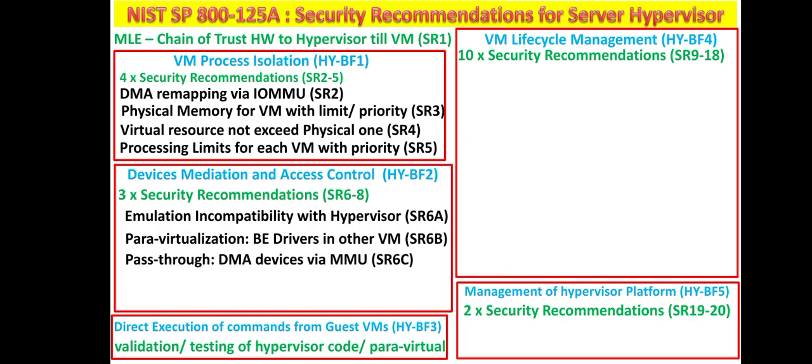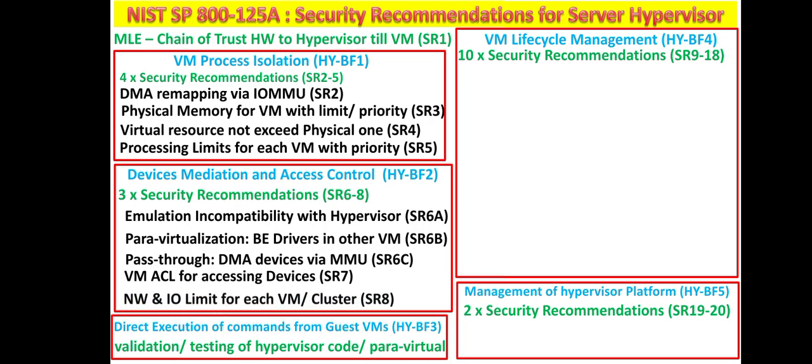For pass-through, also known as self-virtualization, VMs should not access device drivers or direct memory access directly — this should be mediated through the memory management unit. Security recommendation seven requires a whitelist or access control list for each VM covering all devices it can access, and each VM or cluster should have defined upper and lower bounds for network and I/O bandwidth.